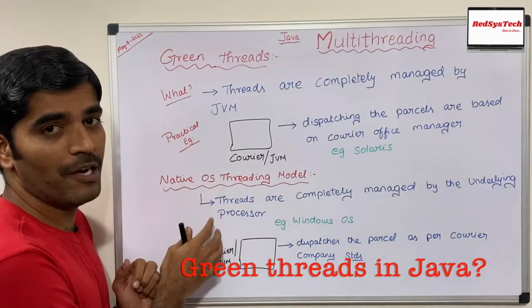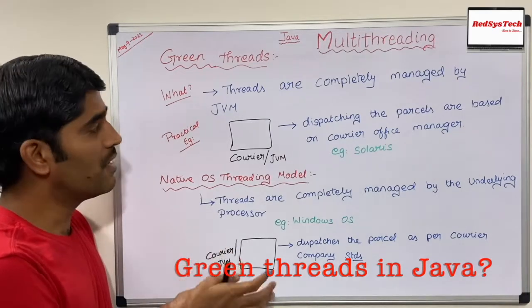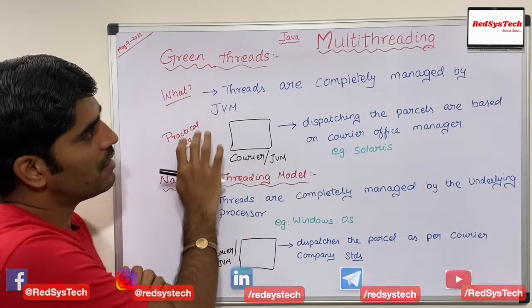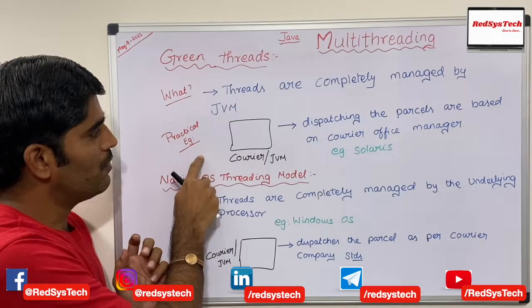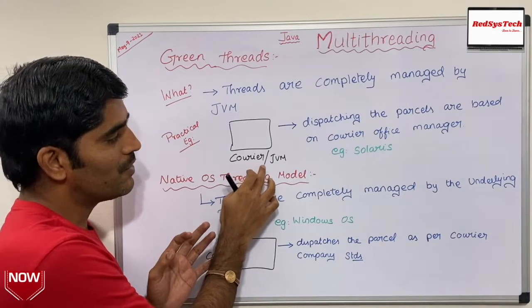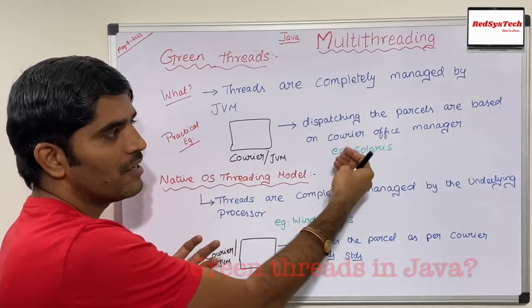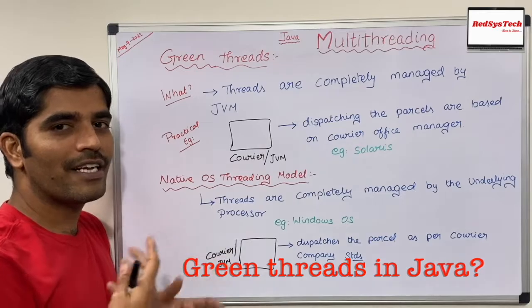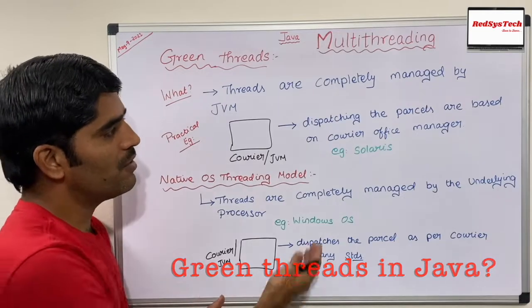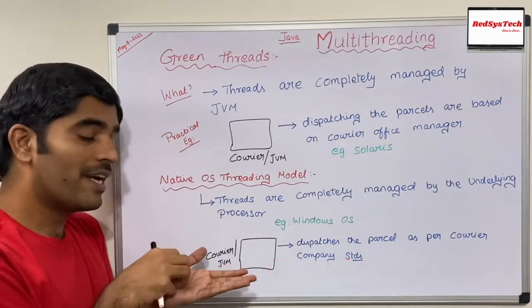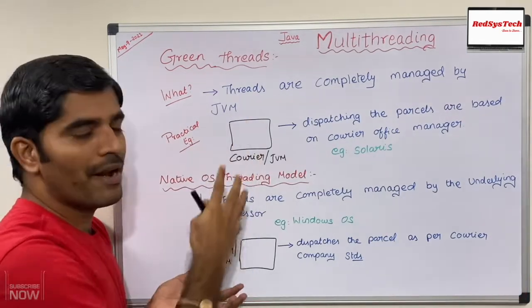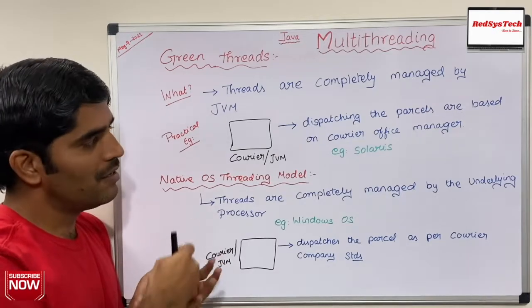There are two different types of models for multi-threading in Java. The first concept is called the green thread model. Green threads are threads completely managed by the JVM. In our practical example, the courier office manager represents the JVM — he is dispatching parcels based on his own decisions, not following any company standards. For example, if you have Solaris as your OS with a JVM running on top of it, the threads are managed only by the JVM, not by the underlying processor.